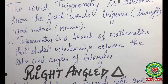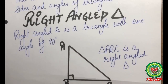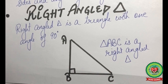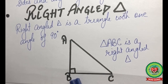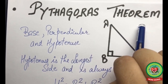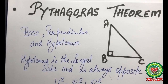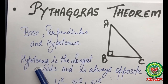In trigonometry, our focus is totally on the right-angled triangle. A right-angled triangle is a triangle with one angle of 90 degrees. In this figure, you can clearly see that triangle ABC is a right-angled triangle with angle B equal to 90 degrees. The three sides are named base, perpendicular, and hypotenuse. The hypotenuse is the longest side and is always opposite to the 90-degree angle.